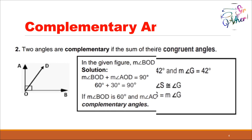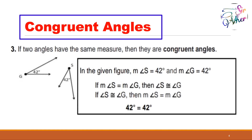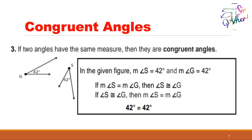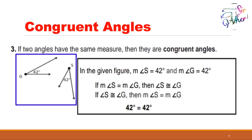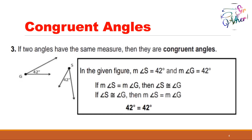For number three: congruent angles. Two angles are congruent if they have the same measure. As you can see on the screen, we have angle G which is 42 degrees and angle S which is also 42 degrees. The measure of angle S equals 42 degrees and the measure of angle G equals 42 degrees. They have the same measure, therefore angle S is congruent to angle G.